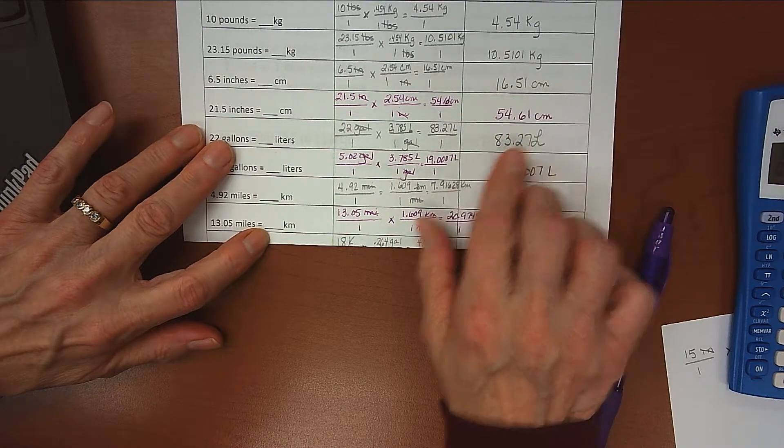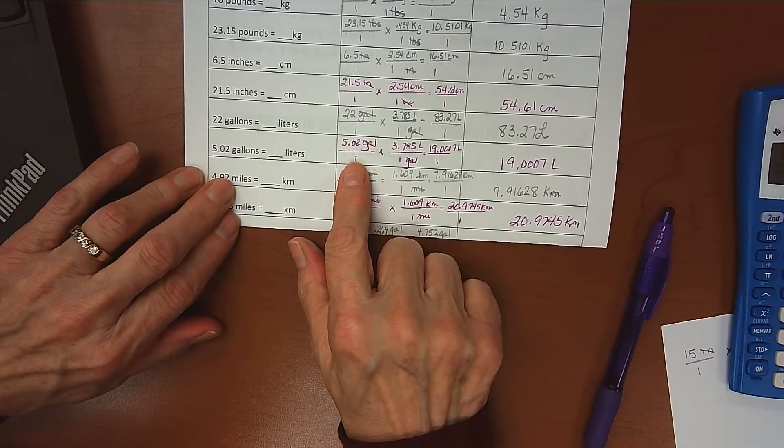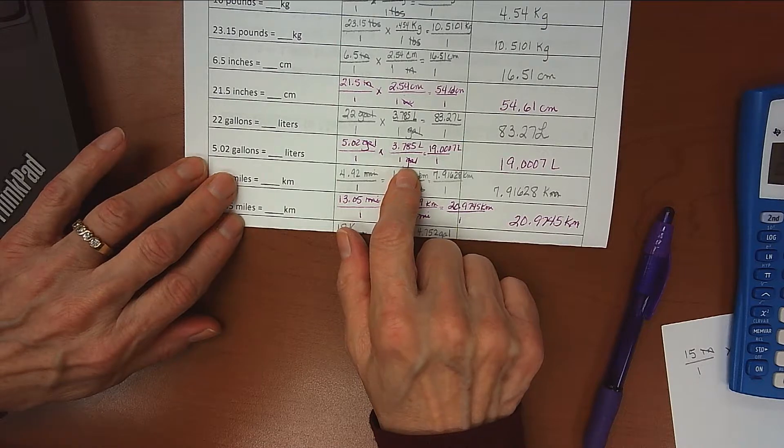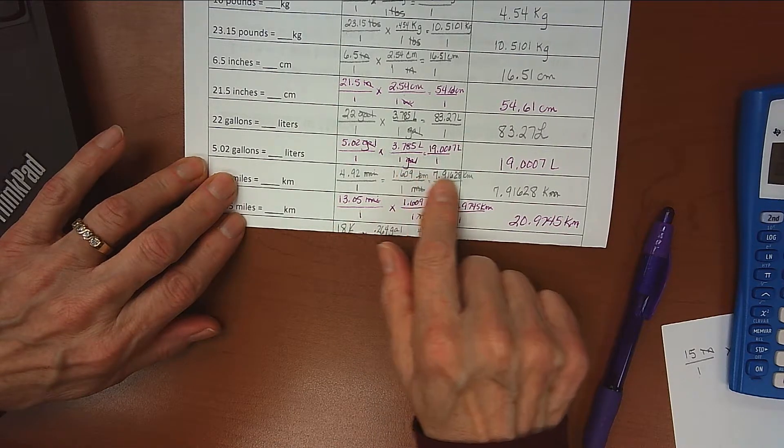The next one here, my conversion factor was 3.785 liters over 1 gallon, and when I did that multiplication I got 19.0007 liters.